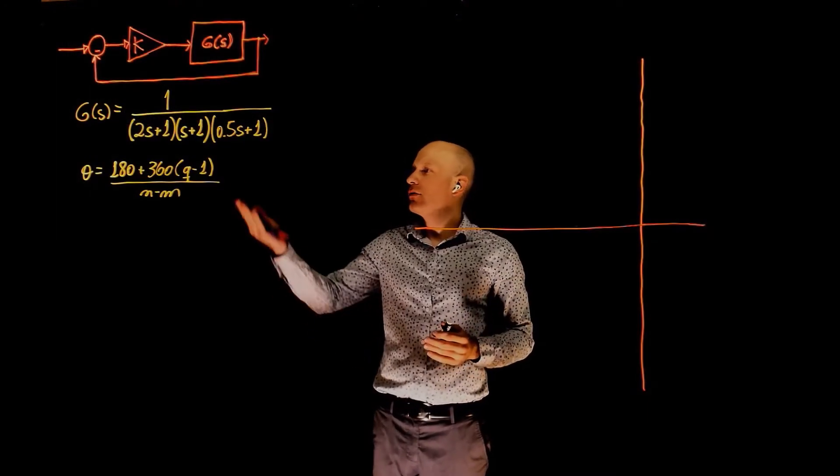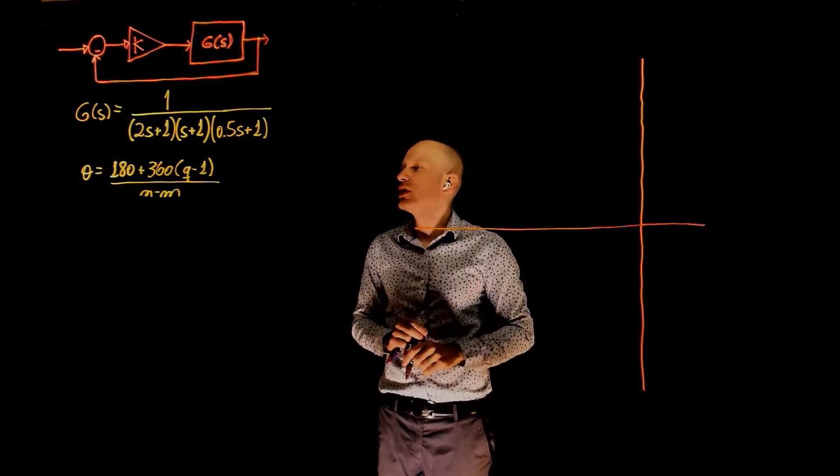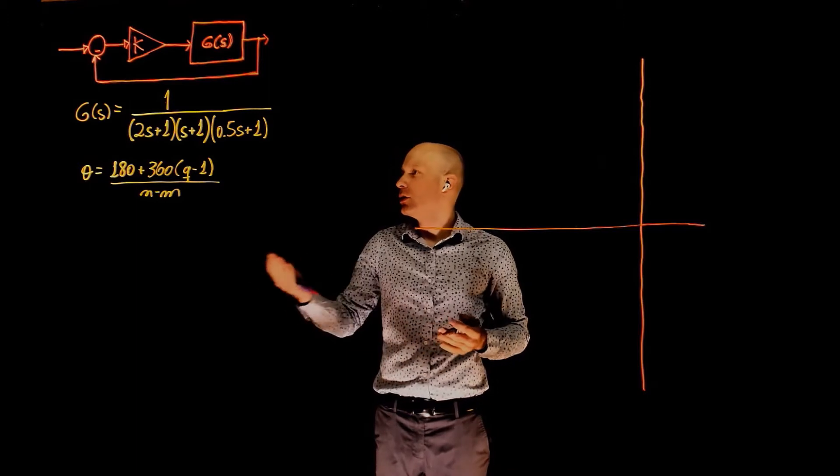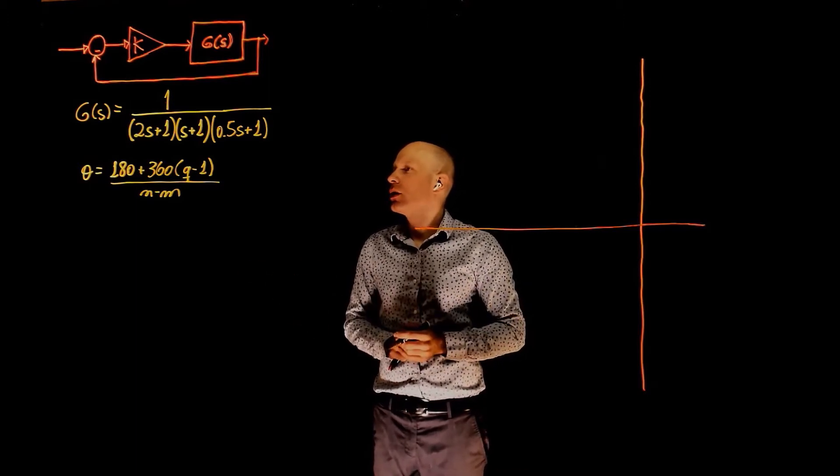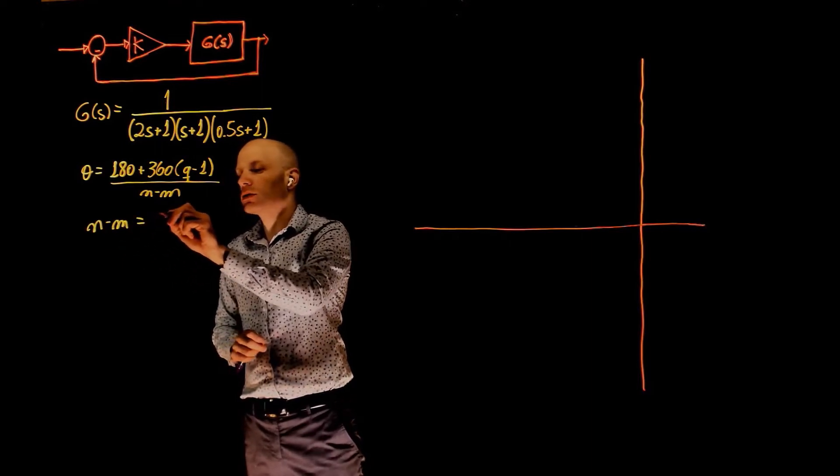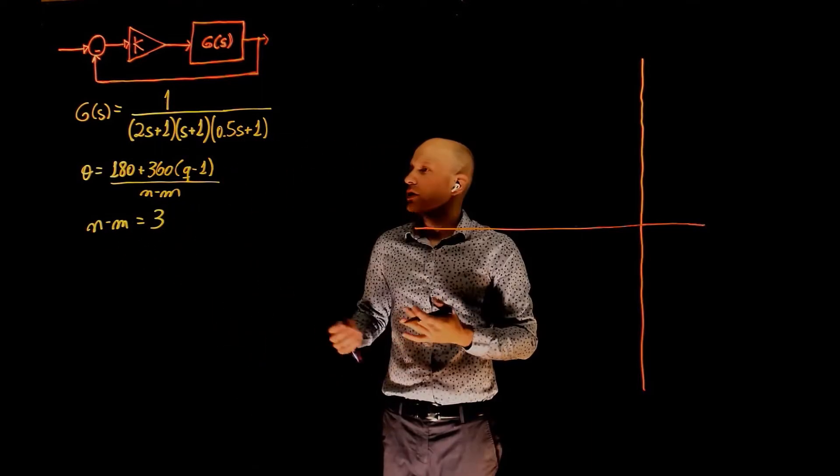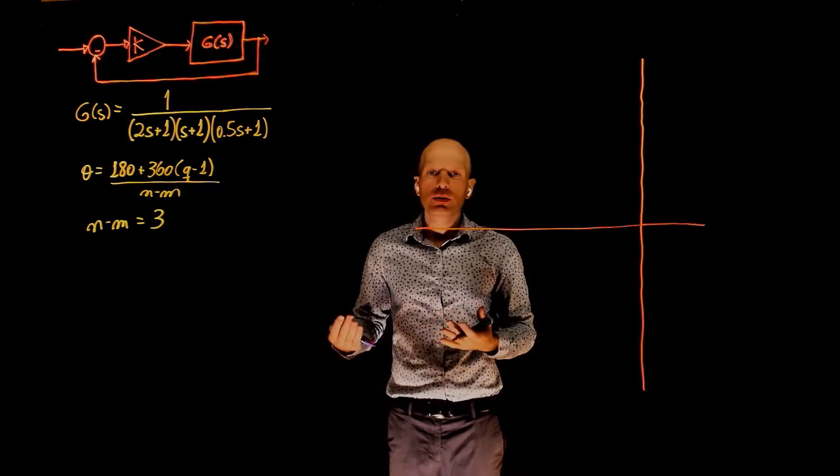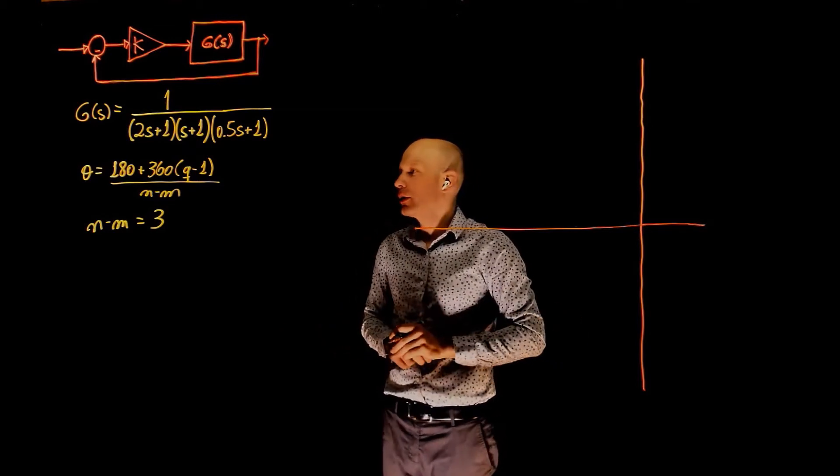In this root locus example, we have a function with three more poles than zeros. n, the number of poles, is three, and m, the number of zeros, is zero. So n minus m is three. We have an excess of three poles, so all poles will have to go to infinity following asymptotes.